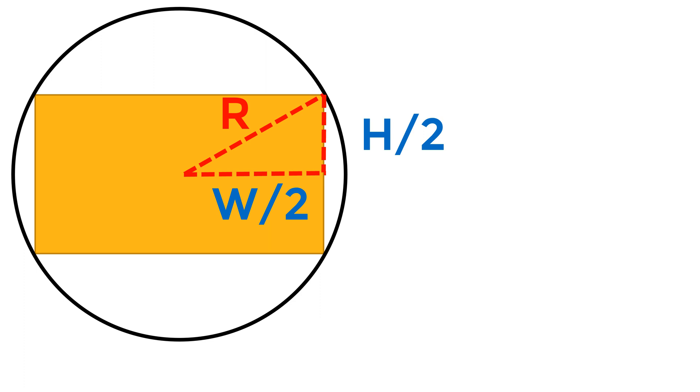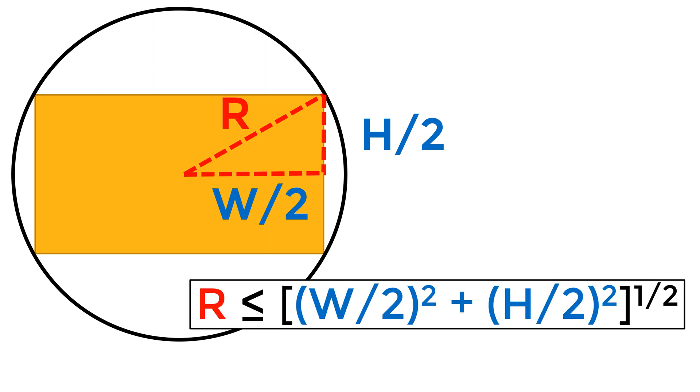Using Pythagorean theorem, you can calculate the half diagonal length as a square root of w over 2 squared plus h over 2 squared. Then you can compare this with the radius r.